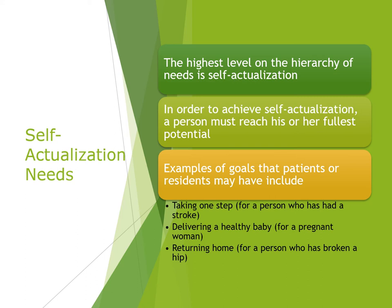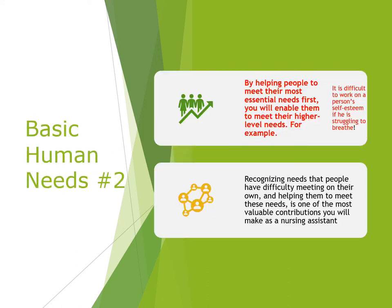The highest level on the hierarchy is self-actualization — reaching one's fullest potential. Examples of goals patients or residents may have include taking one step for a stroke patient, delivering a healthy baby for a pregnant woman, and returning home for a person who has broken a hip. By helping people meet their most essential needs first, you enable them to meet higher-level needs. Recognizing and helping people meet needs they have difficulty meeting on their own is one of the most valuable contributions of a nursing assistant.